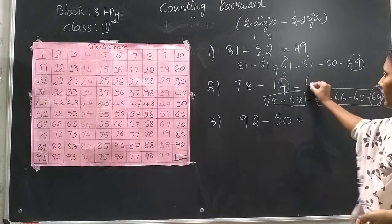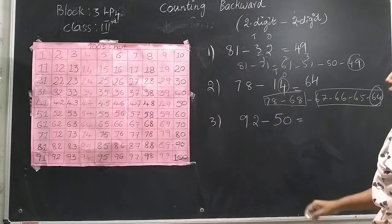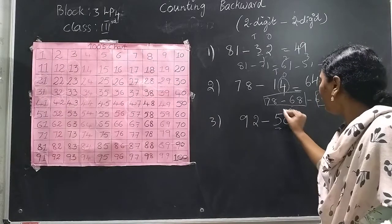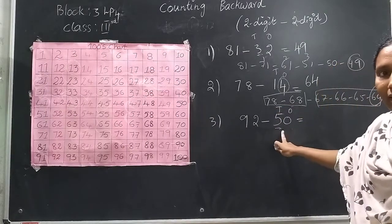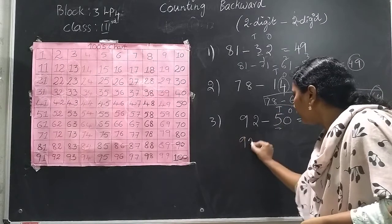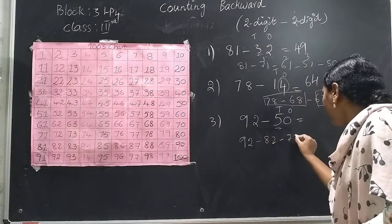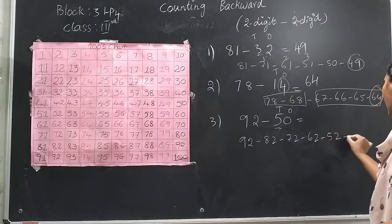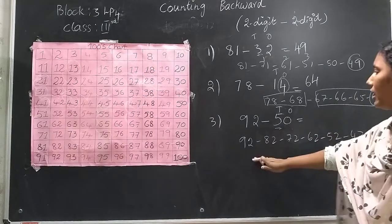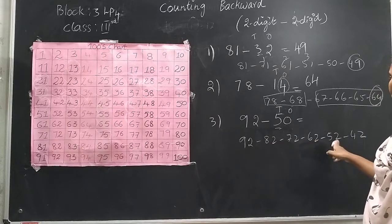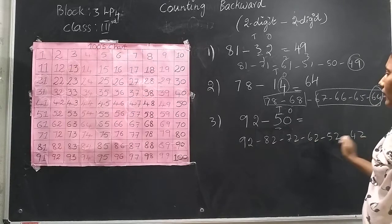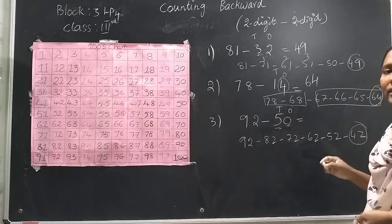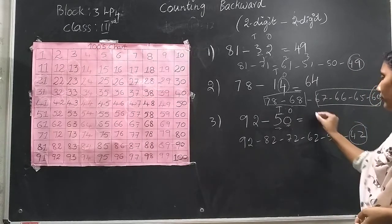Now 92 minus 50. How many steps do I move backward? 5 steps. So: 92, 82, 72, 62, 52 and 42 — that is 5 steps backward. Is there anything in the 1's place? No. So only go for the 10's place. The answer is 42.